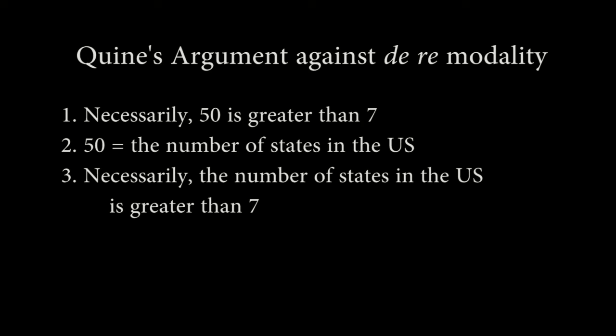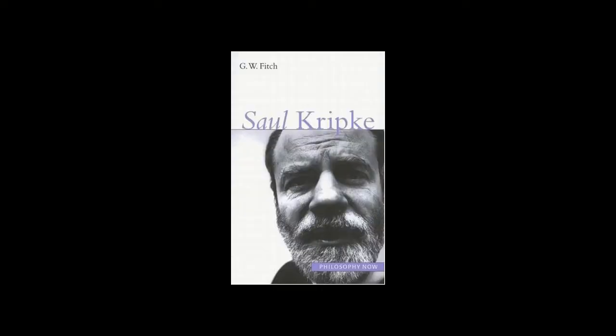The square root of 16 picks out the number 4 in all possible worlds. The number of states in the US picks out different values in different possible worlds. When we are doing modal logic, the two equal terms can only be substituted for one another if and only if either one is a rigid designator for the other, or if they are both rigid designators for a third term. Once we recognize this distinction, the problem disappears.